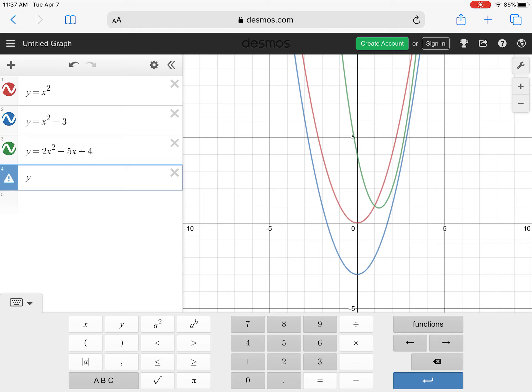So the next one, y equals negative 3x squared. So the negative, we just use a subtract button, minus 6x minus 1.